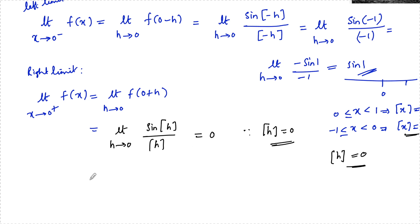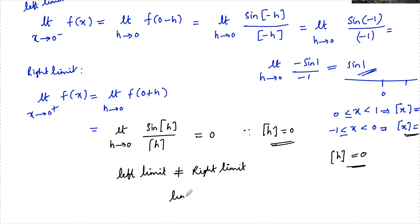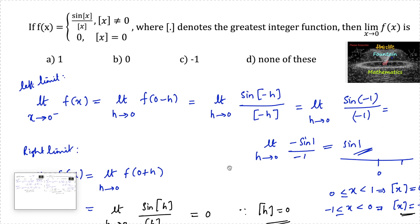So we can see that the left-hand limit and right-hand limit are not equal: the left limit is sin(1), which is not equal to the right limit of 0. Hence the limit does not exist, and the answer is option D: none of these.